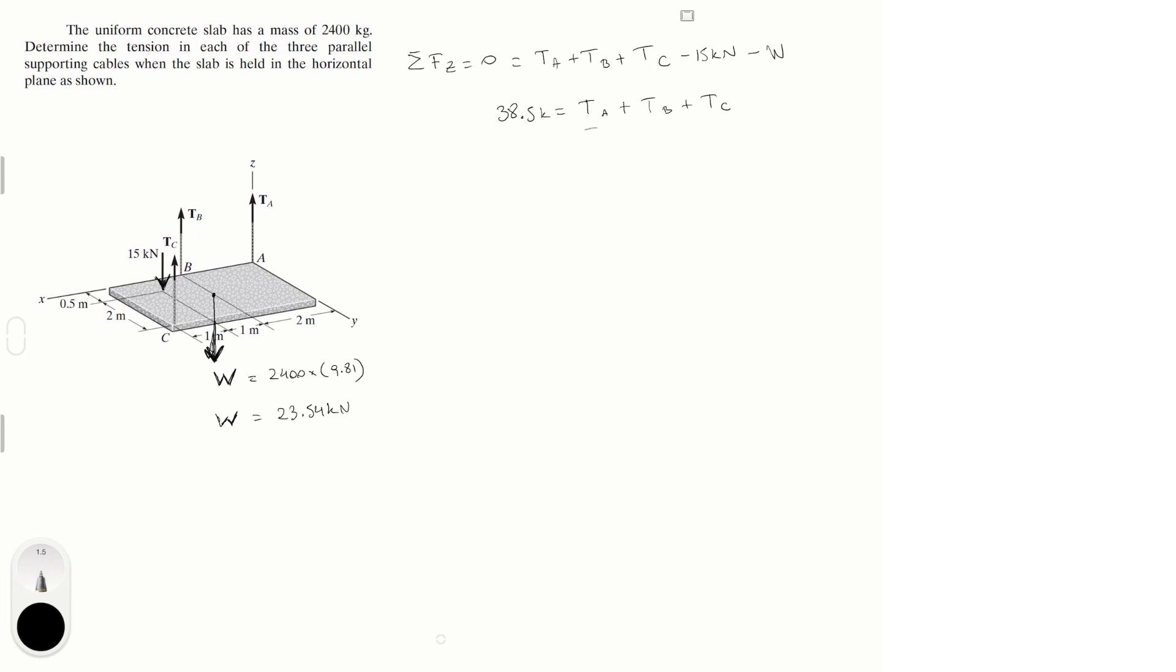So that being said, you solve this equation and you have three variables and only one equation. If we had two more equations we should be able to solve this pretty easily. We're going to do the sum of the moments and we're going to pick x. Why are we going to pick x? Because if we pick the x axis we're going to get rid of variable T_A and variable T_B, and the more variables we get rid of the better. That being said, if you were looking at the axis from this direction, then sum of the moments at x is equal to zero, assuming counterclockwise is positive as if I was looking from this direction.